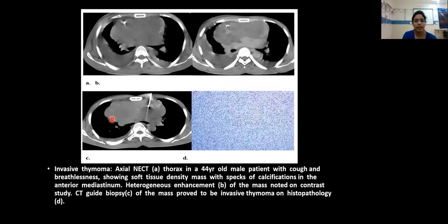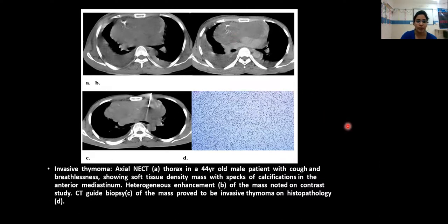These images show a 44-year-old patient with cough and breathlessness, with a soft tissue density mass with speckles of calcification in the anterior mediastinum. Heterogeneous enhancement of the mass is noted on contrast study. CT-guided biopsy of the mass proved to be invasive thymoma on histopathology.